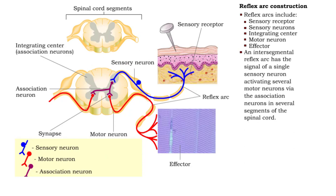When one sensory neuron sends an impulse that activates association neurons in several segments of the spinal cord, the reflex arc is considered intersegmental.